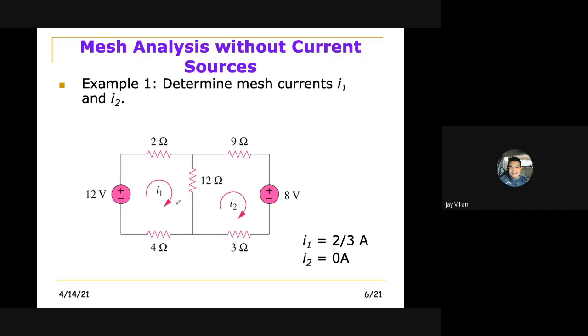So how do we do that? First, again, assign meshes. And then in each of the meshes, we assign mesh currents. In this case, we have I1 and I2 as our mesh currents. And after which, we apply KVL. So how do we apply KVL? It's the same KVL that we used previously.